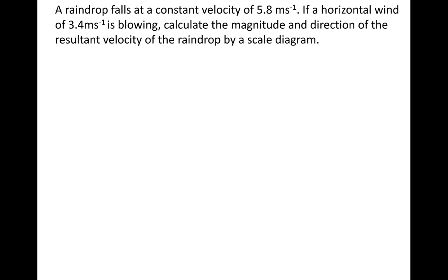Let's have a look at this one. Again, you can verify with calculation if you wish. But I want you to attempt it using a scale drawing. So pause the video, have a go at it. And remember to draw a triangle, calculate the resultant vector, and then get an angle using your protractor. So we've got a raindrop at a constant velocity of 5.8 meters per second. And we've got horizontal wind of 3.4 meters per second. Let's calculate the magnitude and direction of the resultant velocity of the raindrop via scale diagram.